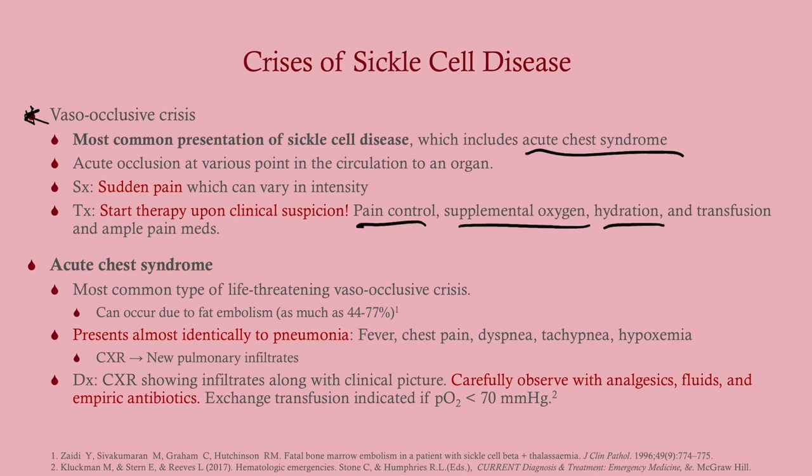Acute chest syndrome is the most common life-threatening type of vaso-occlusive crisis. It can also occur due to fat embolism. It presents almost identically to pneumonia: chest pain (which can be pleuritic), dyspnea, tachypnea, hypoxemia, and even fever. So you've got fever, chest pain, and dyspnea — it sounds just like pneumonia. But if you know the patient has sickle cell disease, the first step is to administer pain control, oxygen, and hydration — a little different from garden-variety pneumonia where you wouldn't immediately give morphine.